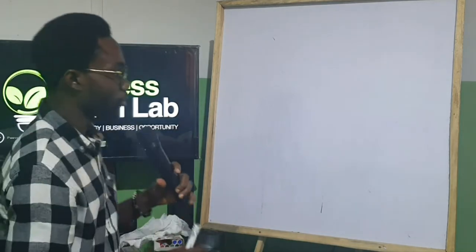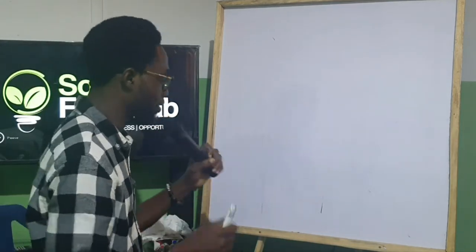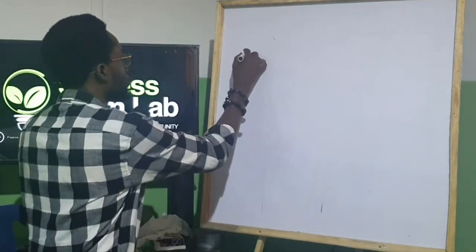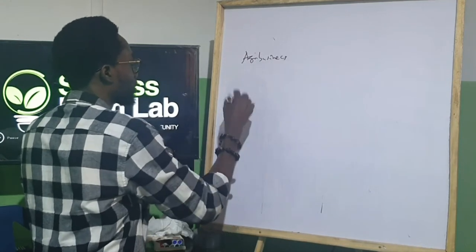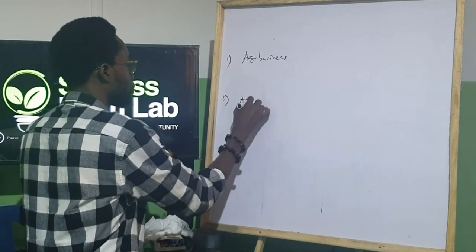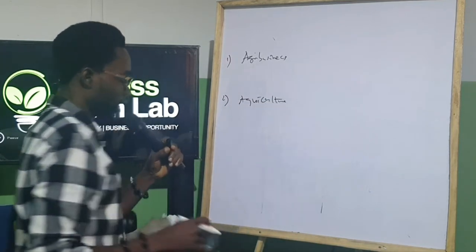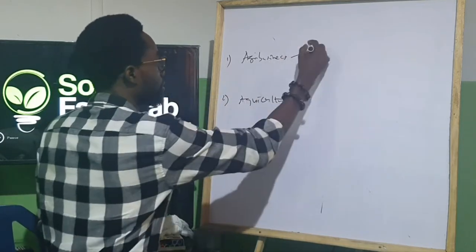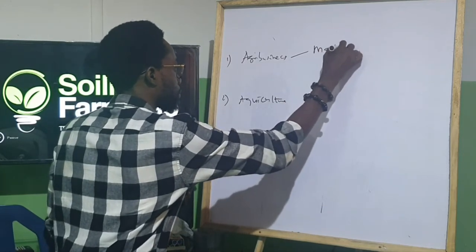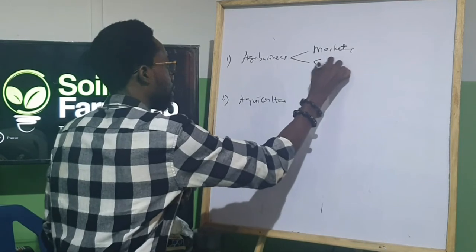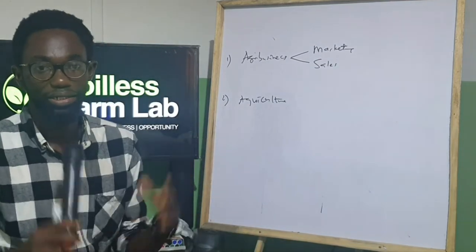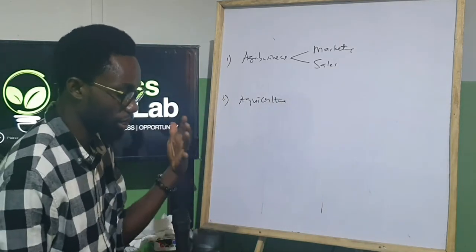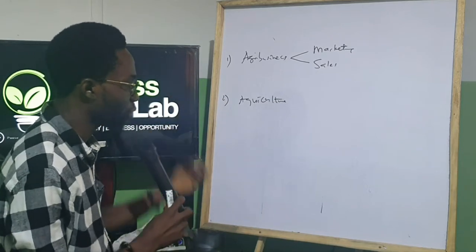In the next couple of weeks, we'll be looking at two major aspects. First, we will continue our journey into agribusiness. Number two, we will look at aquaculture, that is soil-less farming. In our agribusiness, for the next couple of weeks, we will look at marketing, which we've already started, and sales. On the other part on agriculture, we'll look at the basics to have a background to what it is that we want to do.